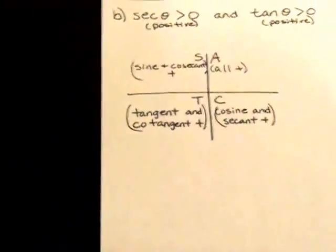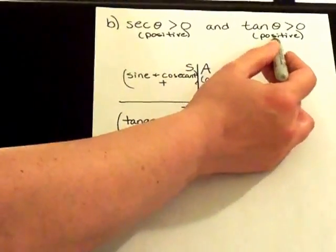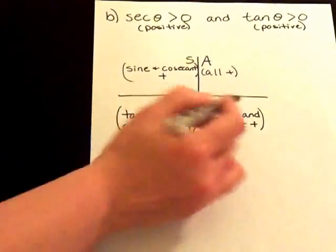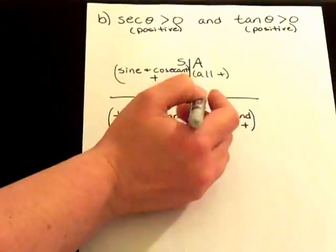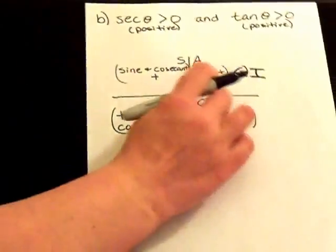We have one more. In this one, both secant and tangent are positive. So if we look at this, the only quadrant in which both of those are positive is quadrant one. So we know that the angle lies in quadrant one.